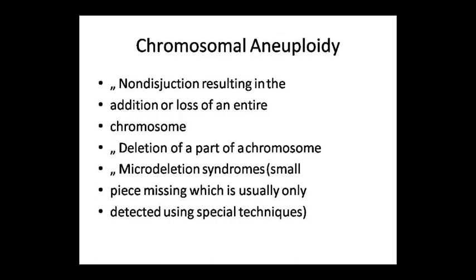What is chromosomal aneuploidy? It is non-disjunction. In mitosis and meiosis, disjunction is a feature that happens during metaphase and anaphase. If disjunction does not happen, it is non-disjunction. Therefore, the entire chromosome number will increase or decrease — addition or loss will be shown. Or any part can be deleted, such as microdeletion syndrome, where a small piece is missed, usually detected using special techniques.